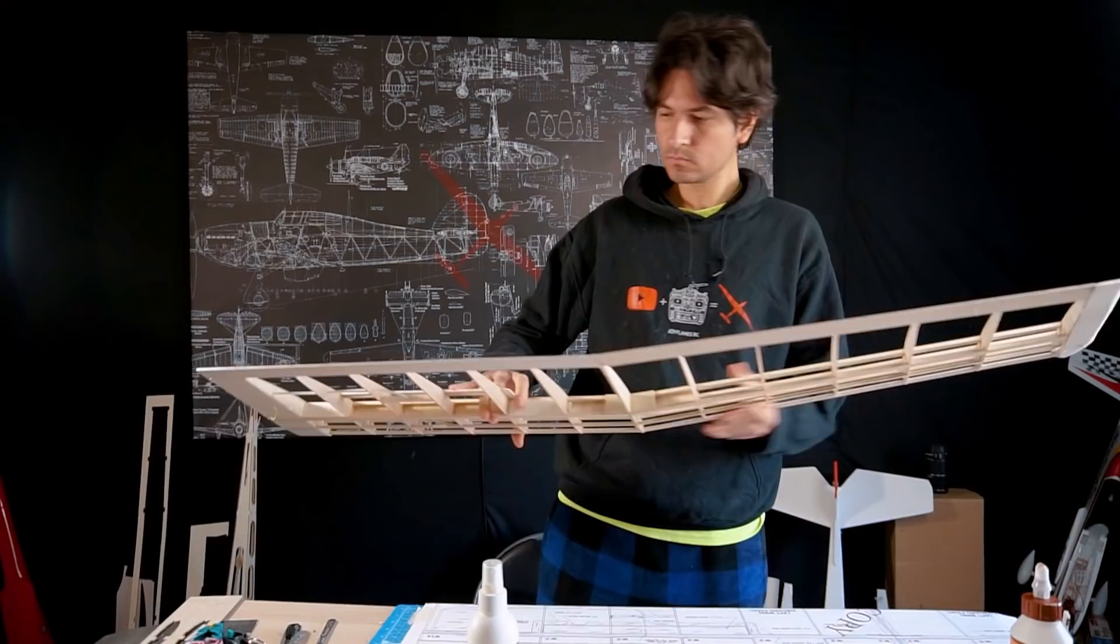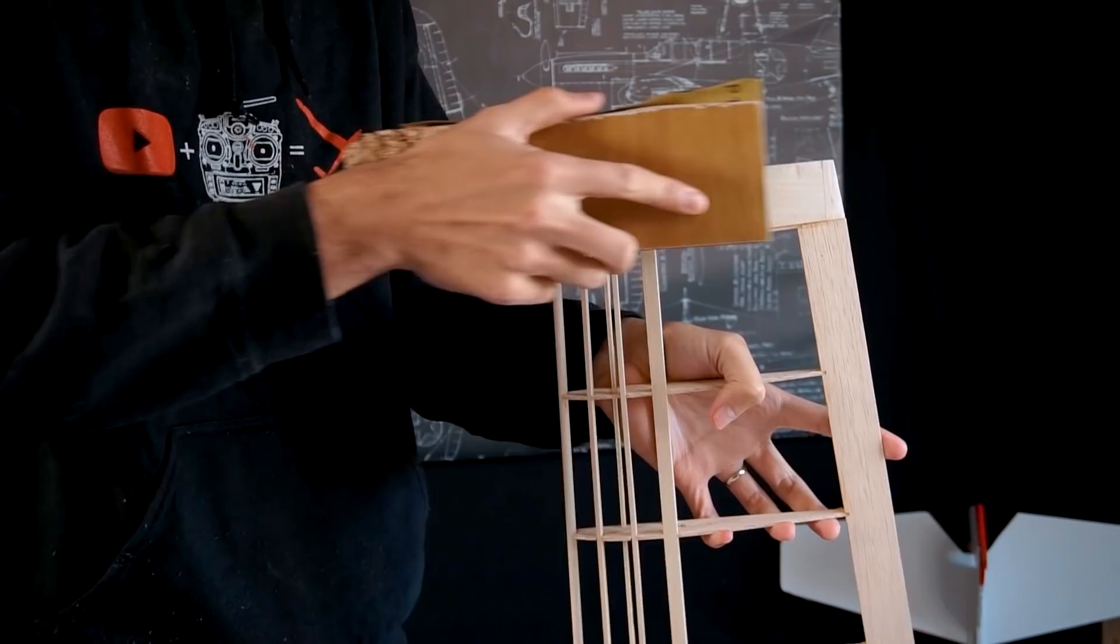We have one wing structure ready. We have to sand down the imperfections and make it even, and then we will have one wing ready for covering. Halfway through the covering process we'll also put the spoilers in place.